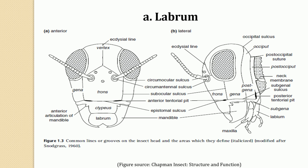Starting with the labrum: the labrum is a widely discussed structure of the insect head. Some workers have regarded this labrum as a fused segmental appendage, but it is now universally accepted as a sclerite — the first sclerite of the insect head — and not having any significance as a segmental appendage.